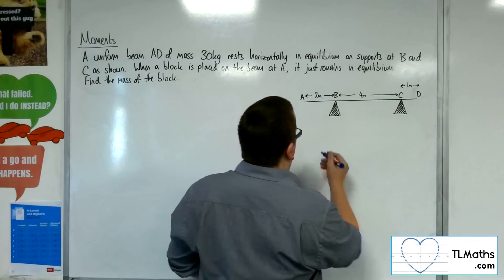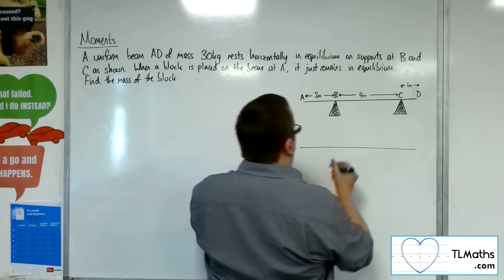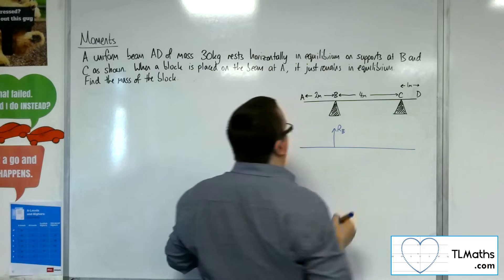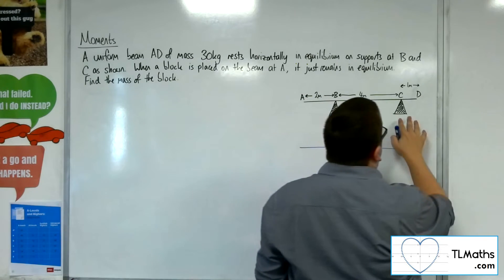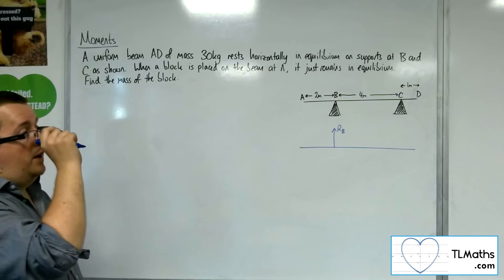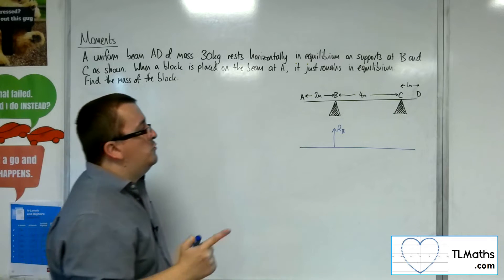Let's draw a force diagram so we can see what's going on. At B, there will be a normal reaction force. However, at C, there won't be, because the rod will be tilting around B. So the normal reaction force at C will be zero.